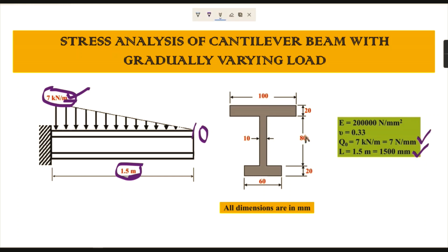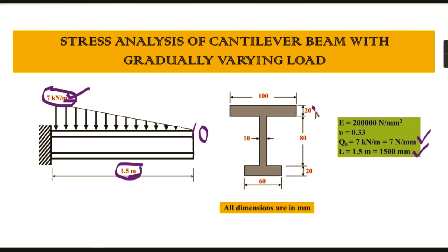The cross-section of this beam is an I-section. W1 is the top flange width, W2 is the bottom flange width, and W3 is the entire height of the beam. Adding the right-hand side dimensions: 20 plus 80 plus 20 gives 120 mm as the total height. The flange thickness is 20 mm on both top and bottom flanges.